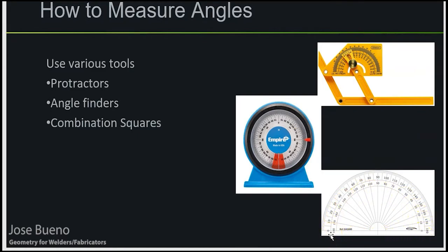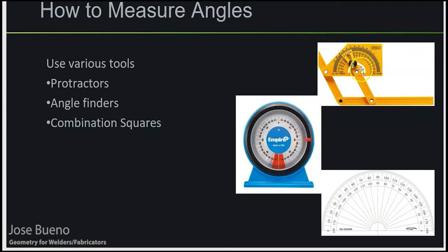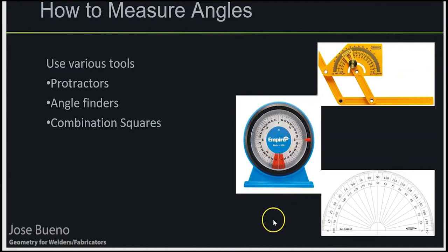You'll notice that on one end of the protractor it starts with a number, usually 0 or 180, and as you work your way across, if you go to the outer numbers on the scale, it goes from 0 to 180 and then starts back at 0 — you can work your way back to 180 using the inner set of numbers. This protractor can easily be used to measure angles on both sides. This angle finder normally has a magnetic base, and you stick it on pieces of material that are at an angle, and it automatically tells you what angle that piece is at.